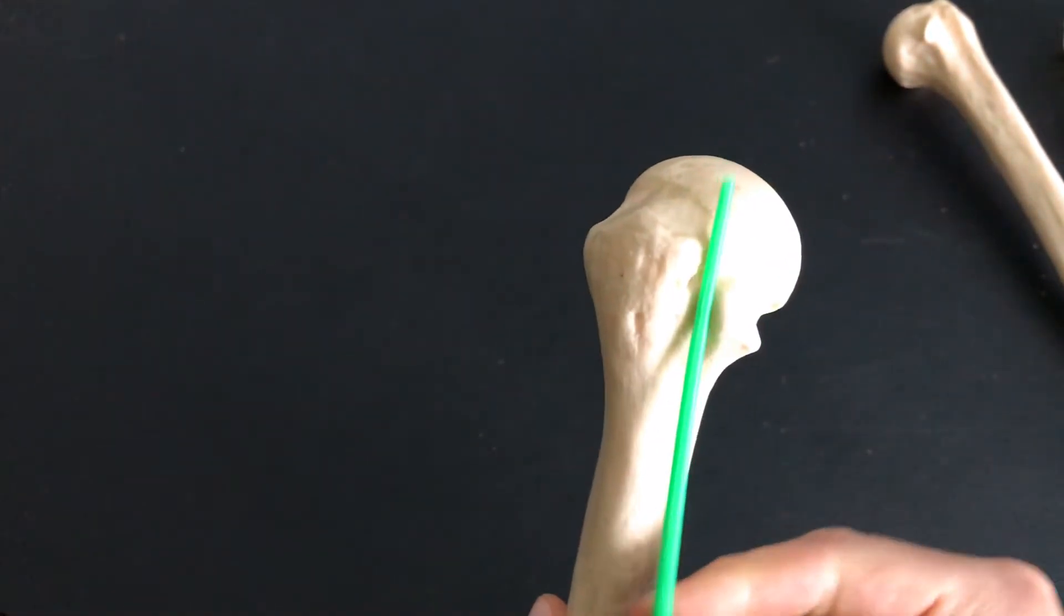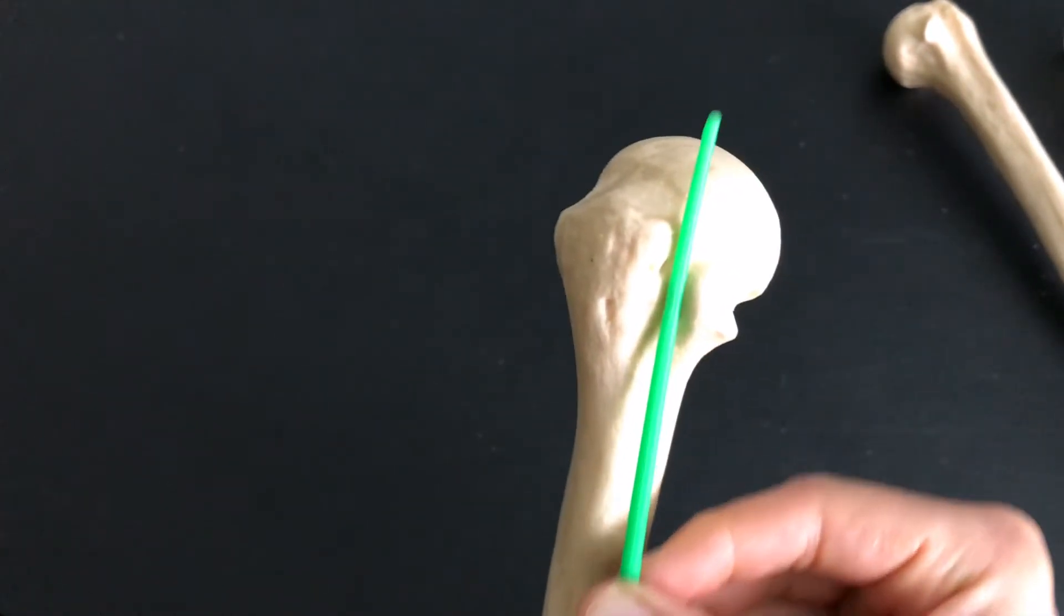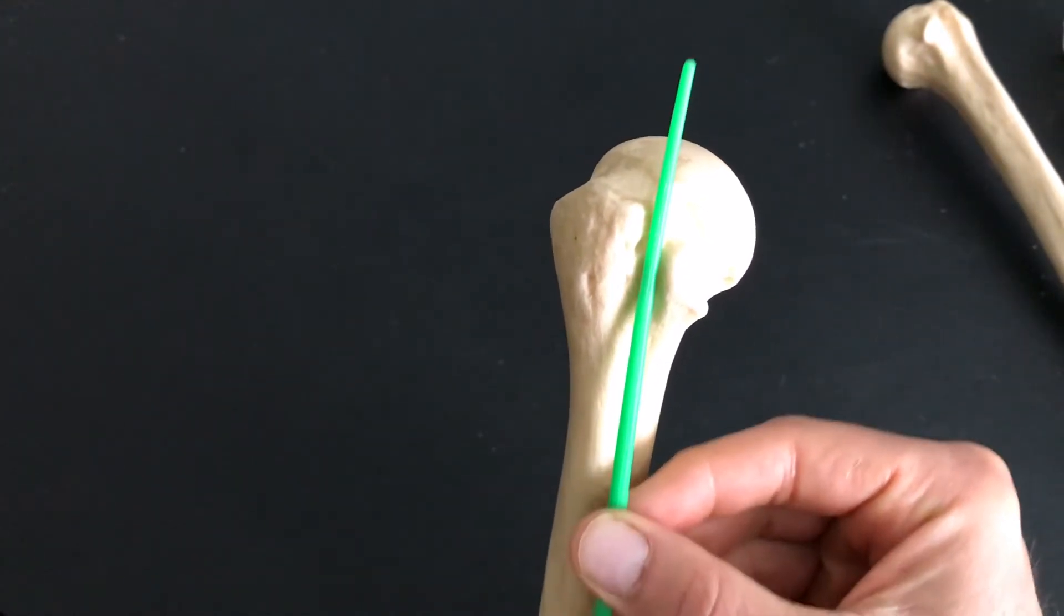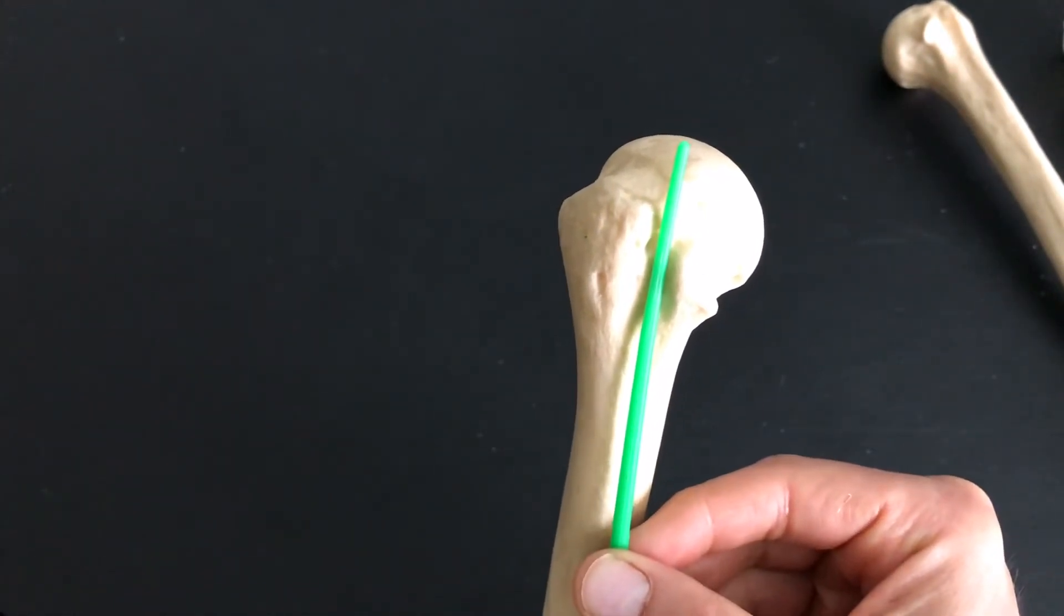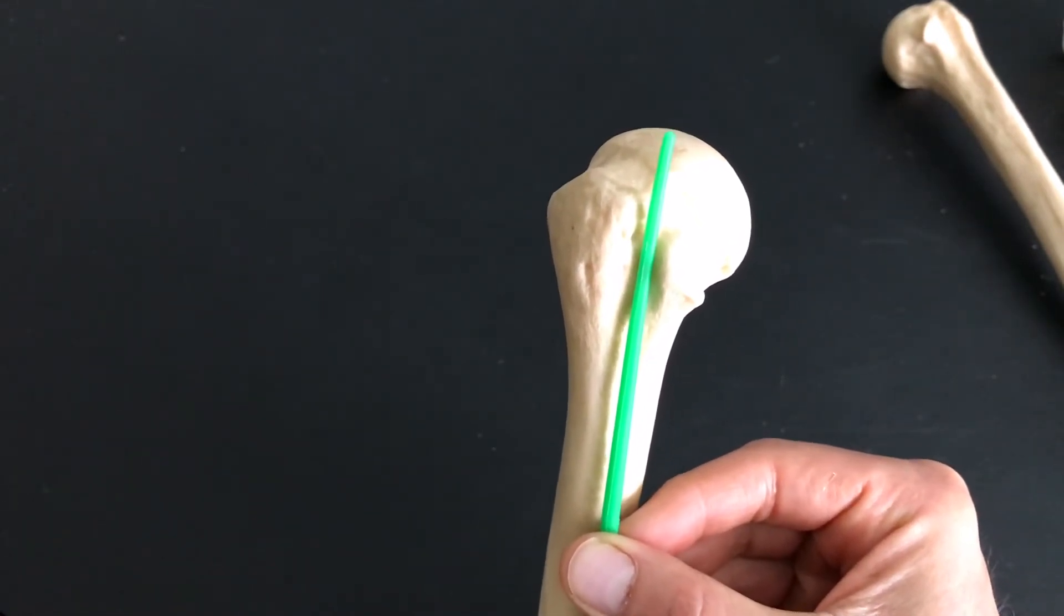That's the muscle that sits on the anterior side of your arm, and that muscle, the biceps brachii muscle, runs right through this bicipital groove or intertubercular groove. If you see this, you know you're looking at the anterior side.